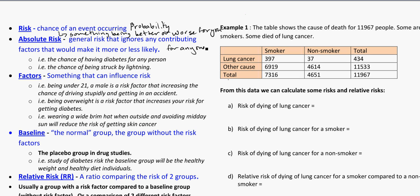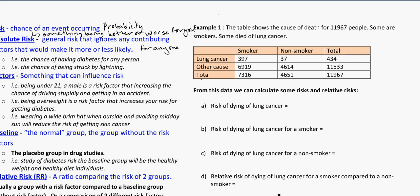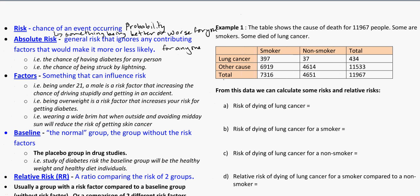So if we think about our first example, this table shows the cause of death for 11,967 people. Some are smokers, some died of lung cancer. From this data, let's take a look at the risk of dying of lung cancer. Now I'm not saying absolute risk explicitly, but this is basically what I'm applying, because I'm not specifying a subgroup — just in general, for anybody, what is the risk of dying of lung cancer?